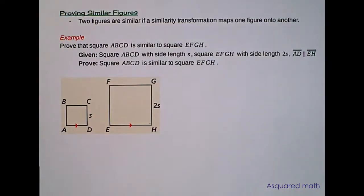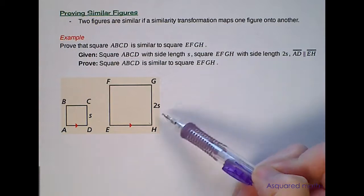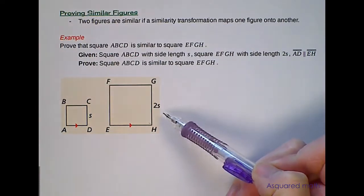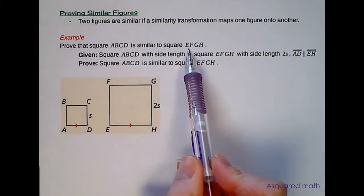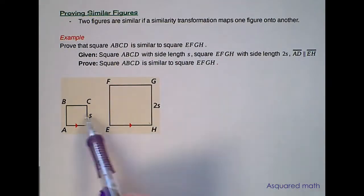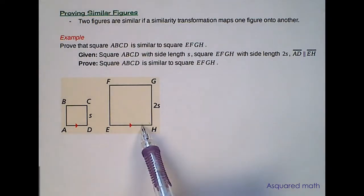The last part of this section is proving similar figures. Two figures are similar if a similarity transformation maps one figure onto another. So if we take a look at the example that we have here we want to prove that square ABCD is similar to square EFGH. So prove the smaller square is similar to the bigger square through transformations that map ABCD onto EFGH.